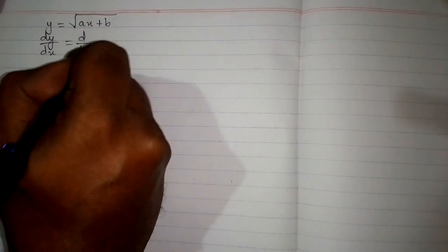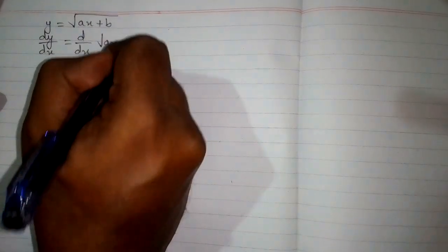In this video we will find the derivative of y equals square root of ax plus b. So first we will take the derivative of both sides. We have dy by dx equals dy by dx of square root of ax plus b.